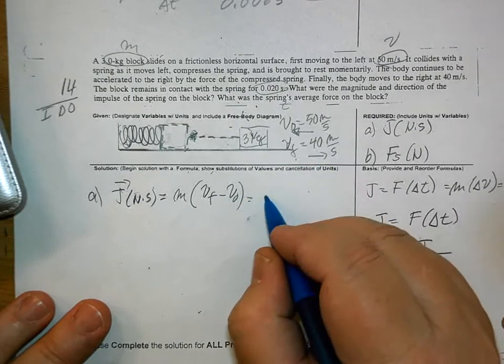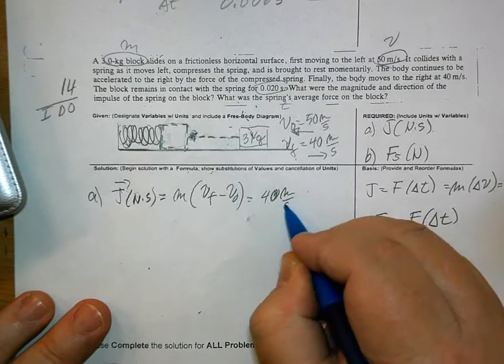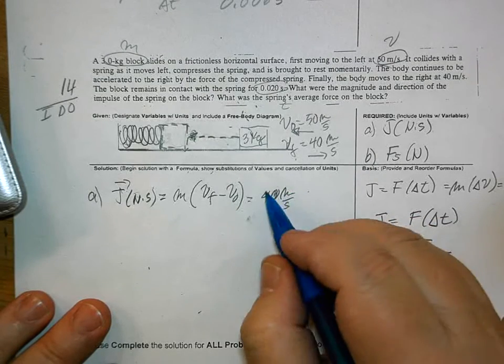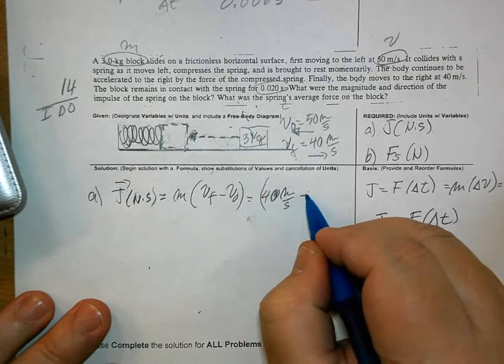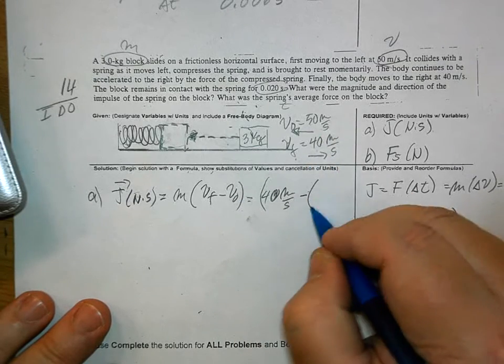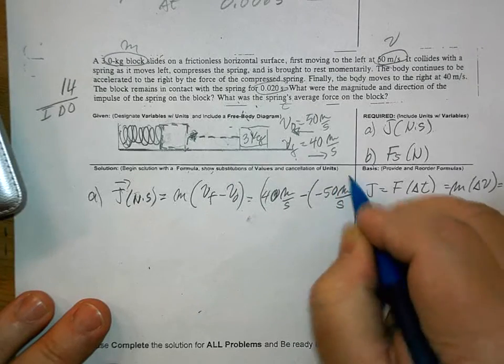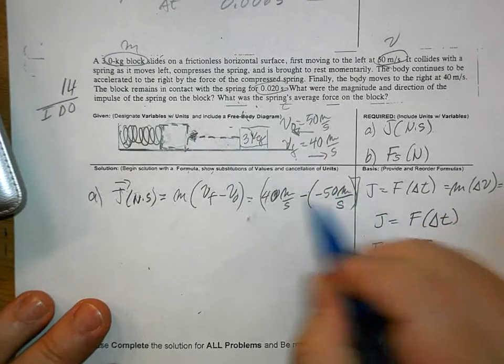Final velocity is 40 meters per second. The initial velocity is 50, but because it's going in the wrong direction, we're going to have to say minus 50. That's really important that you don't make that mistake.